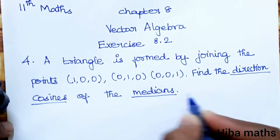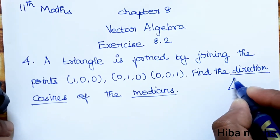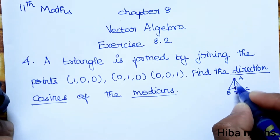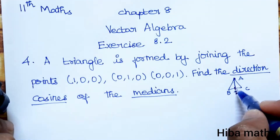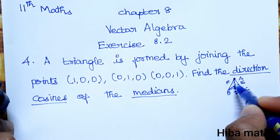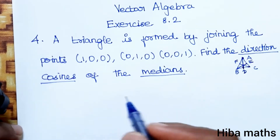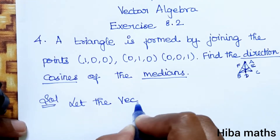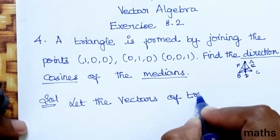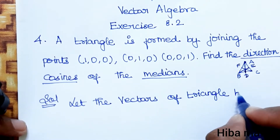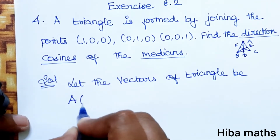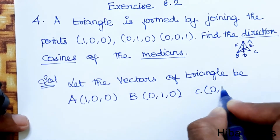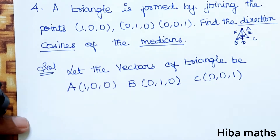We need to find the direction cosines of the medians. Let the vectors of the triangle be: vector A is the first point (1,0,0), vector B is (0,1,0), and vector C is (0,0,1). The medians will be AD, BE, and CF.